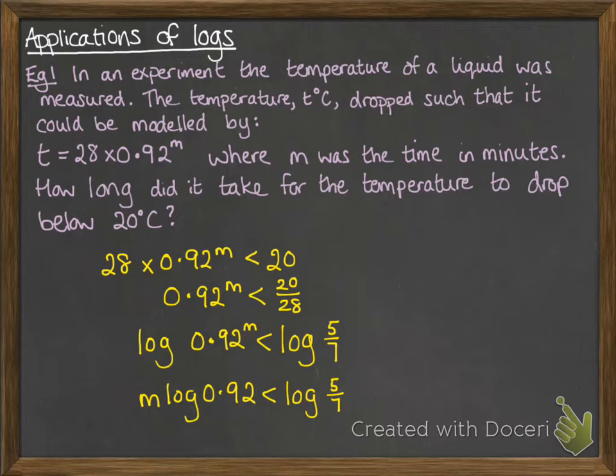We can now isolate M by dividing through by log of 0.92. You need to be very careful here because log of 0.92 is actually negative, so it redirects our inequality sign and switches it around. If you divide or times by a negative number then it reverses the inequality.